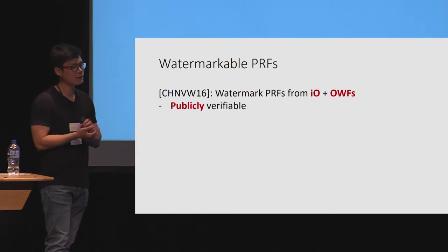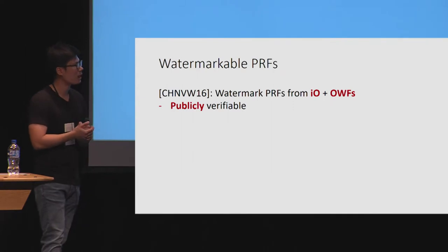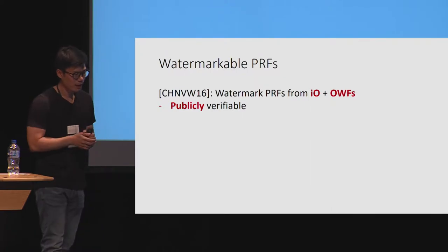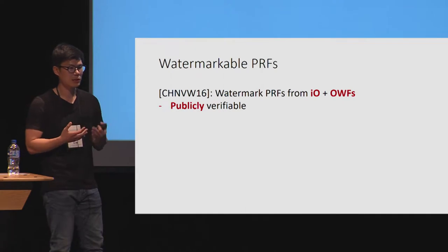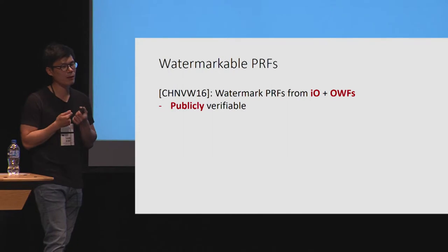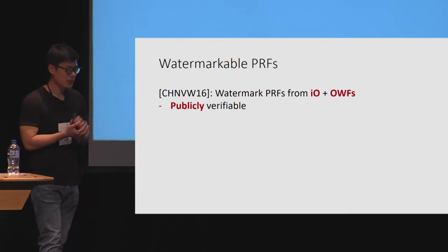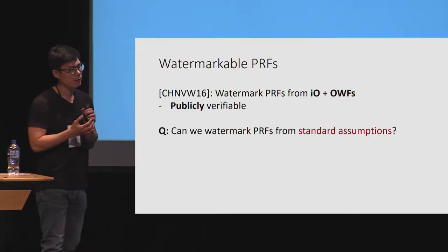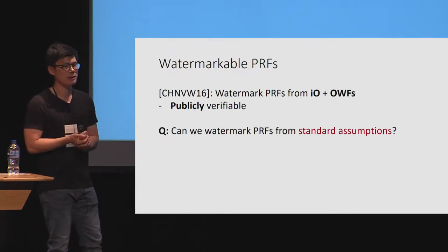So what do we currently know about watermarking for PRFs? The first positive result came in 2016 from the work of COINETEL, who showed that using an indistinguishability obfuscator and one-way functions, we can watermark a large class of PRFs. A very nice property of their construction was that the resulting watermarking scheme was publicly verifiable — all users in the system can have access to a public verification key and run the verification algorithm themselves, which is a really nice property for most applications.